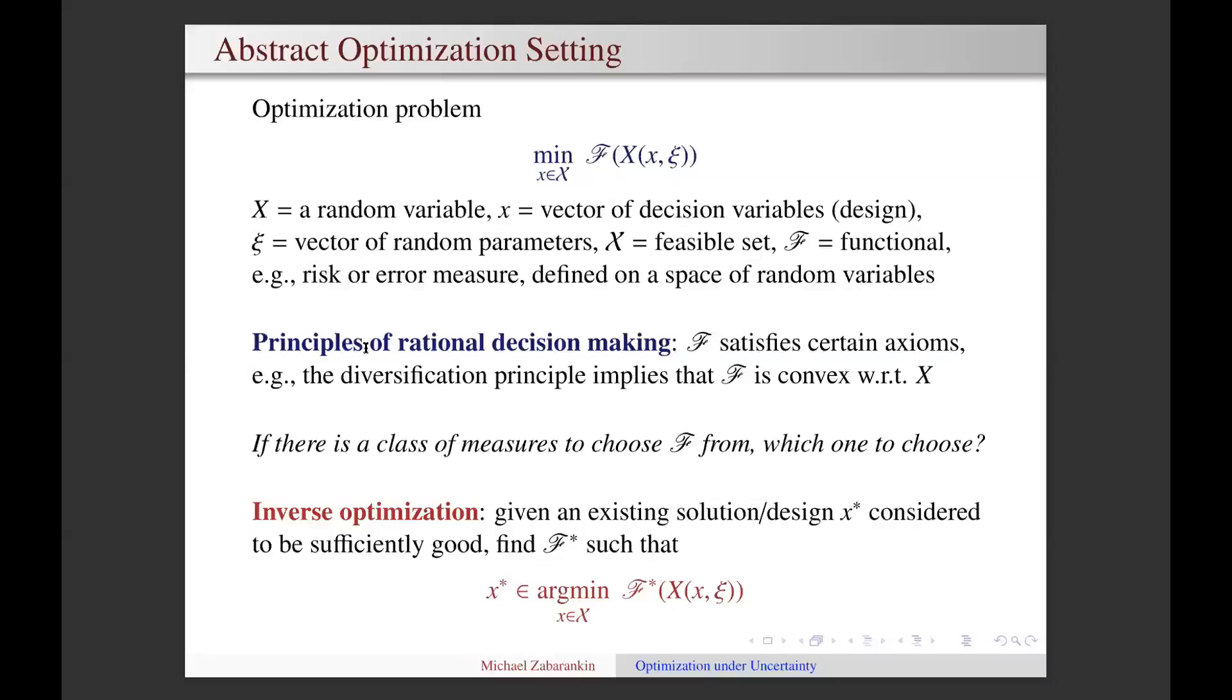For example, the functional F is an error measure in regression analysis and is a risk or deviation measure in portfolio theory. In general, the functional F could be defined axiomatically to conform to principles of rational decision making. For example, the diversification principle implies that F should be convex with respect to random variable X.